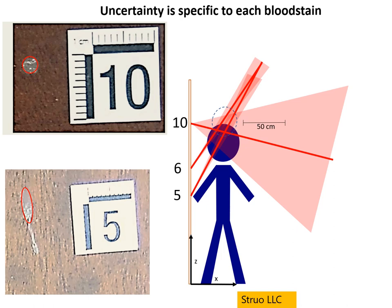Here's an example from case work my company did four years ago. You have a couple of stains on the vertical wall: stain number 10 is almost round, while stain number 5 is elliptical. You have less uncertainty in the determination of the directional and impact angle with an elliptical shape than a round shape. You see those cones around the main direction — they account for the uncertainty in the direction of the blood drop when it hits the wall. Certain stains will have less uncertainty in their impact direction.